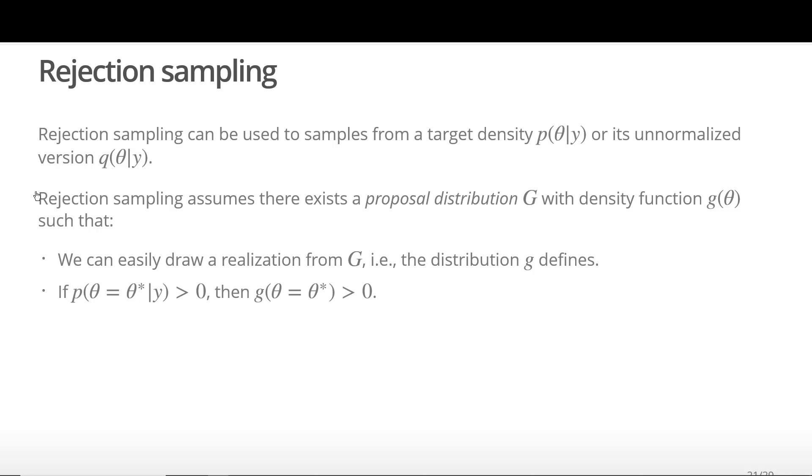Anywhere the target density is positive, g must also be positive. There has to exist a constant value M such that the importance ratio P over g is bounded by M for all values of theta.